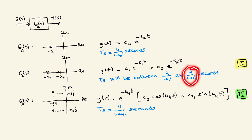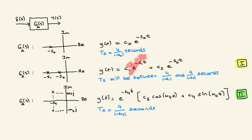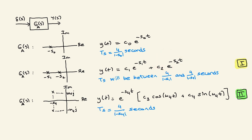If the poles are separated from each other by five times or more — say one is at minus five and the other at minus one — you could ignore the faster pole at minus five. The solution will be close to the one dominated by the pole nearest the imaginary axis, because the faster component vanishes almost immediately by comparison.